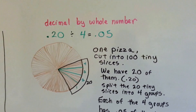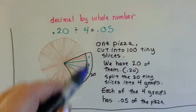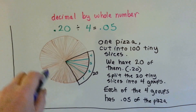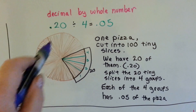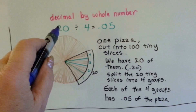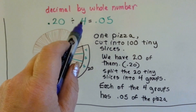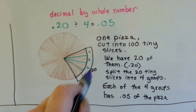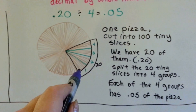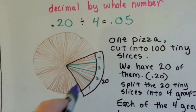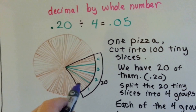What happens when we divide a decimal by a whole number? Now we've got 20 hundredths divided by 4. We have one pizza, but it's cut into 100 tiny little slices. Out of the 100 tiny little slices, we have 20 of them — 20 hundredths. We're going to split the 20 of the hundred into 4 equal groups. Here's the 20 slices — 20 tiny, tiny little slices — and we're going to get 5 of the hundred pieces in each group.